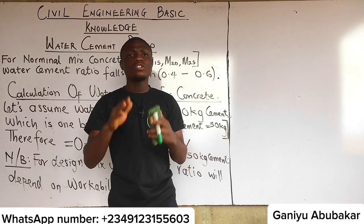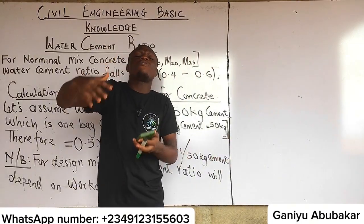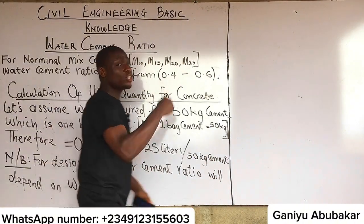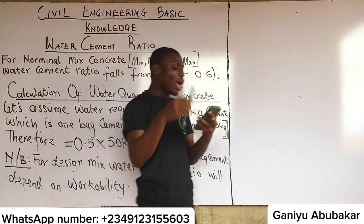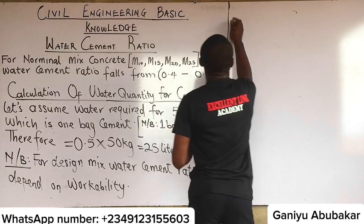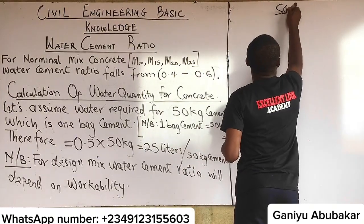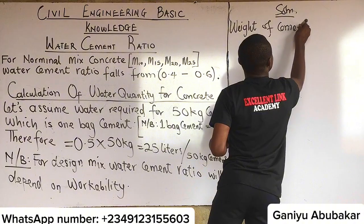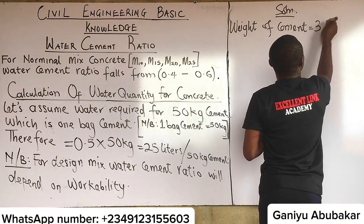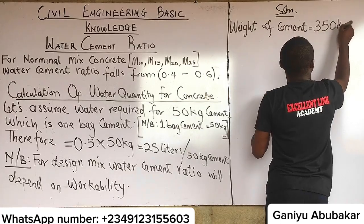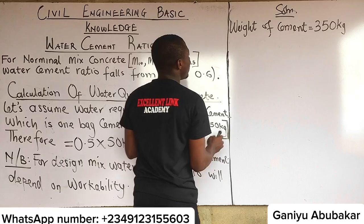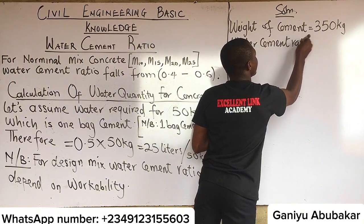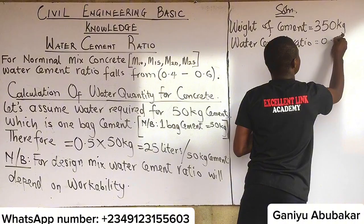There are two cases when calculating water cement ratio: sometimes the engineer specifies the WCR range, or it may be given directly in the question. For this question, the given values are: weight of cement = 350 kg, and water cement ratio = 0.5.